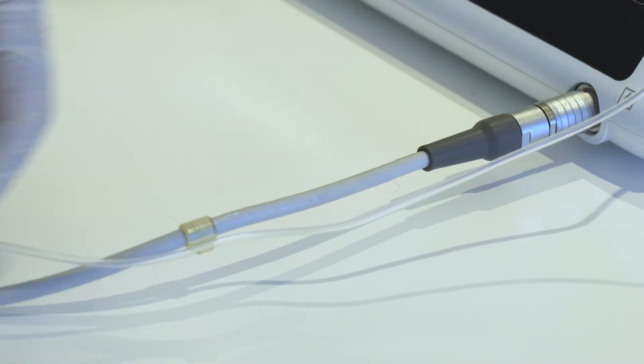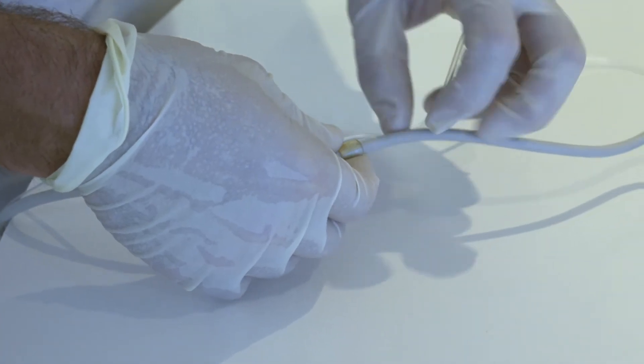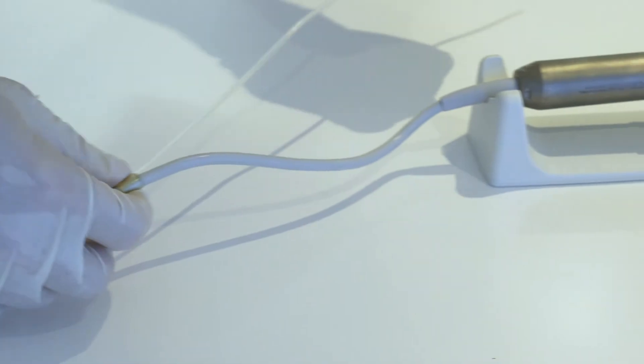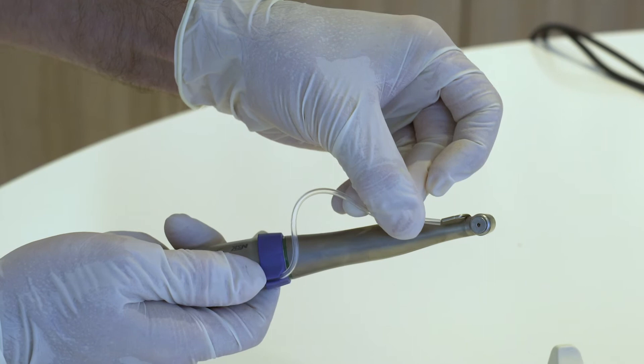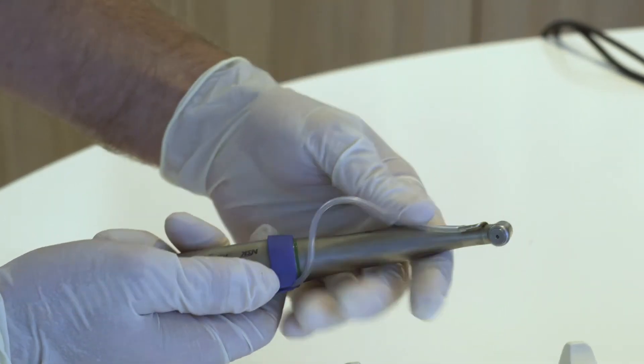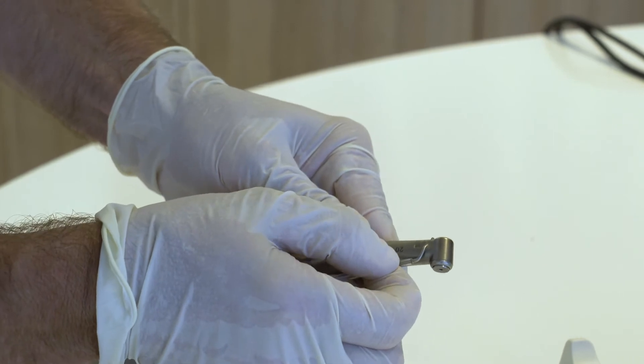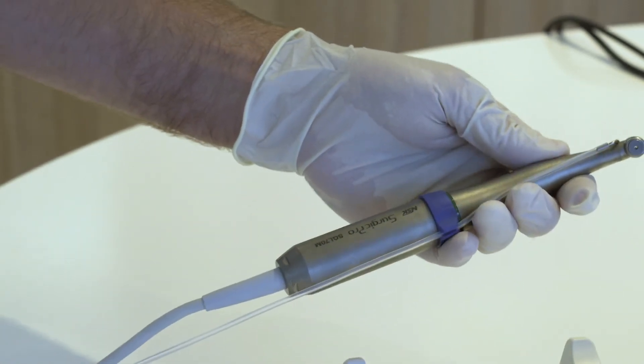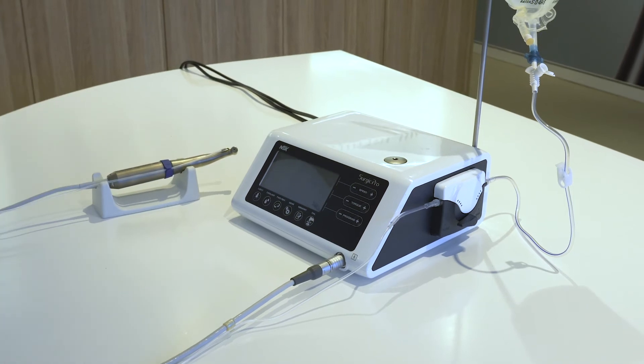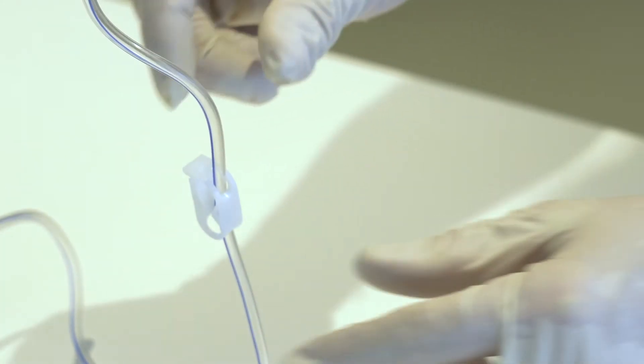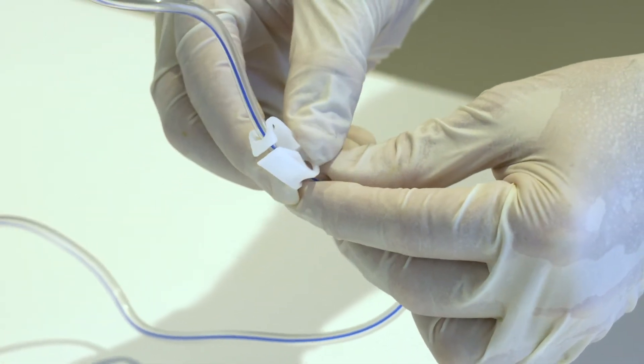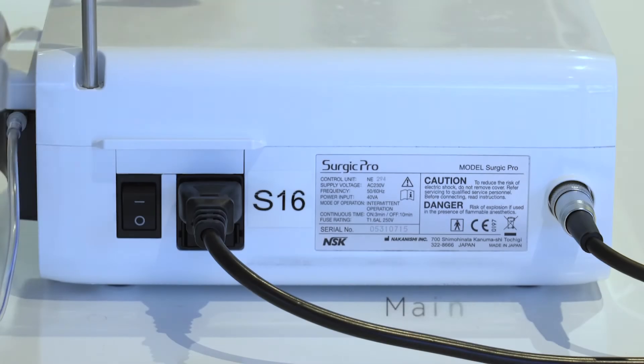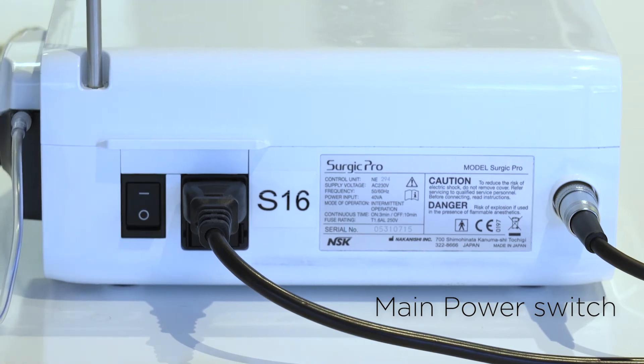Insert the irrigation tube into the tube holders, motor and handpiece. Open the tube clamp.